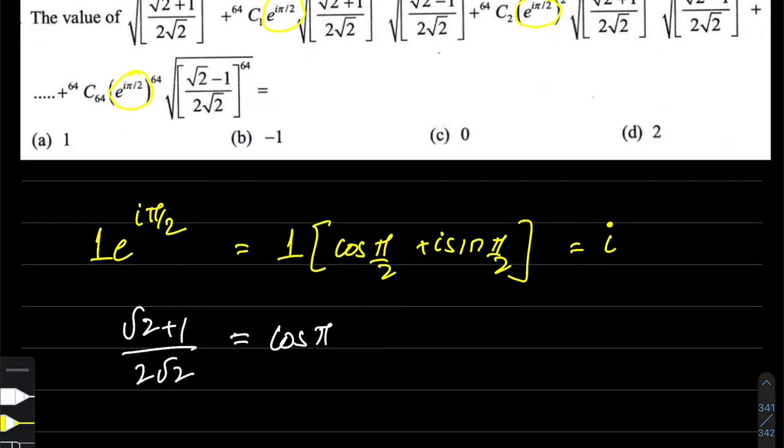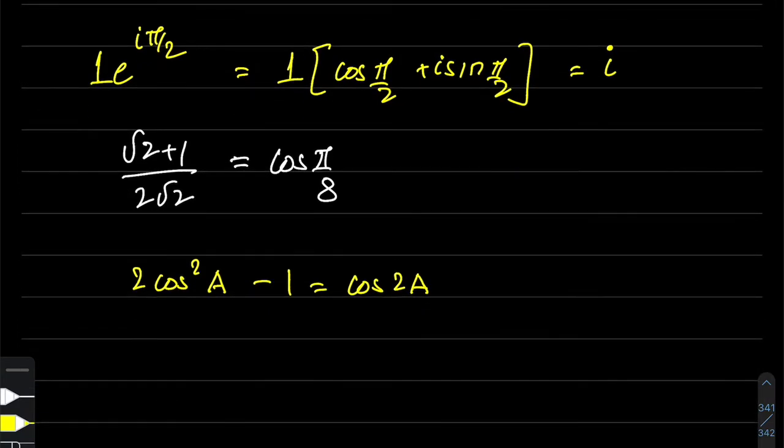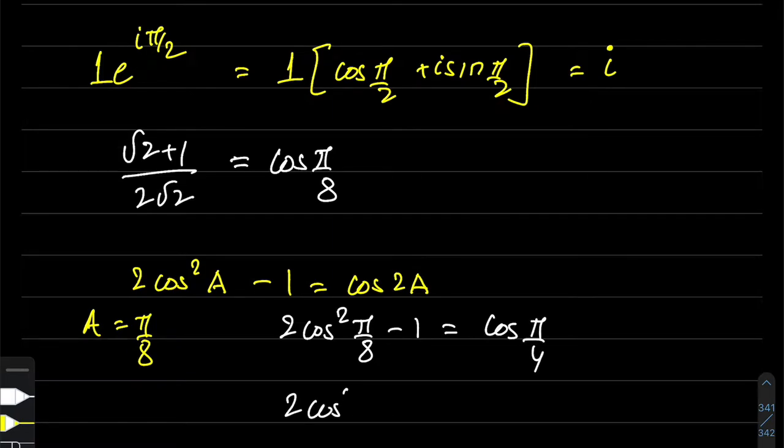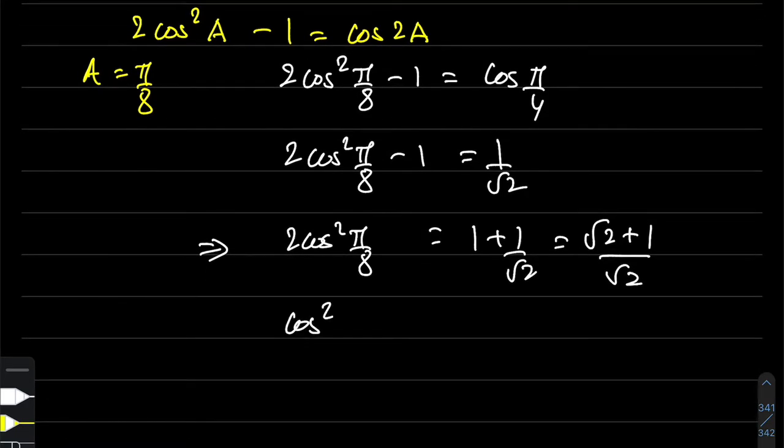This expression is actually cos(π/8). Let's check: we know 2cos²A - 1 = cos(2A), our famous double angle identity. If you plug in A = π/8, you get 2cos²(π/8) - 1 = cos(π/4), and cos(π/4) = 1/√2. So 2cos²(π/8) = 1 + 1/√2 = (√2+1)/√2, which gives us cos²(π/8) = (√2+1)/(2√2), meaning cos(π/8) = √[(√2+1)/(2√2)].